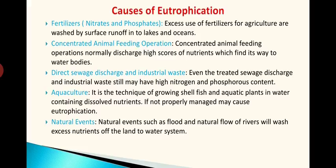Aquaculture is also contributing a lot to eutrophication — it is the technique of growing shellfish and aquatic plants in water containing dissolved nutrients. For the growth of things cultivated through aquaculture, nutrients must be continuously provided. If not properly managed, it may cause eutrophication. That is not a major reason, but if not properly managed, it may also cause eutrophication.